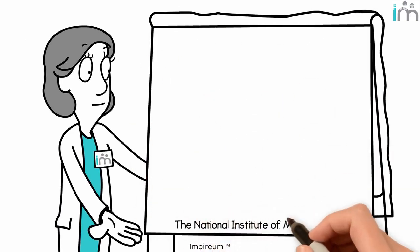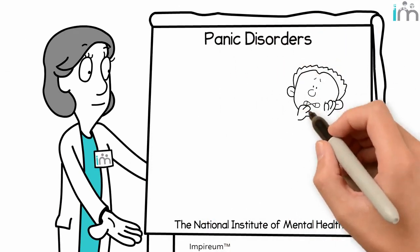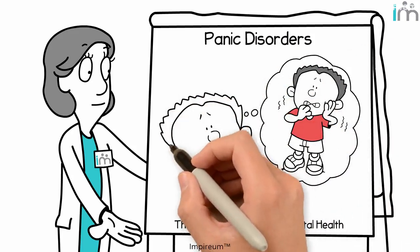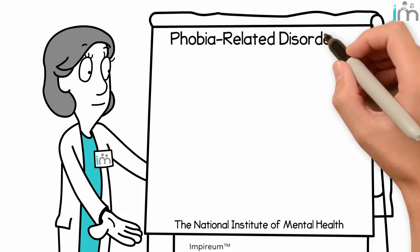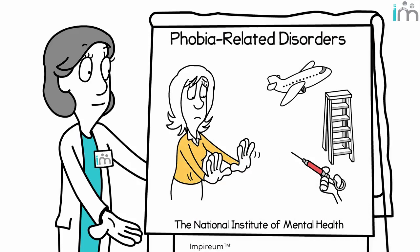The National Institute of Mental Health lists panic disorders, which can lead to those infamous panic attacks, causing the sufferer to then worry about having another panic attack. Phobia-related disorders, such as intense fear of blood, flying, or heights, leading to avoidance behaviors.